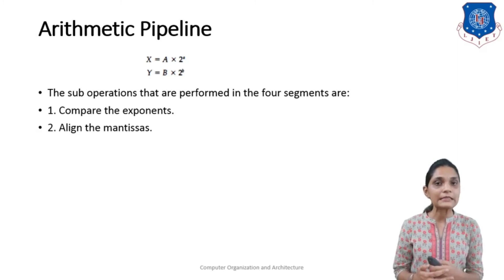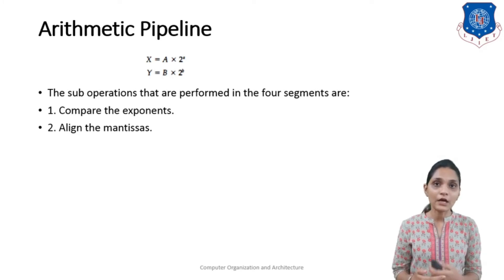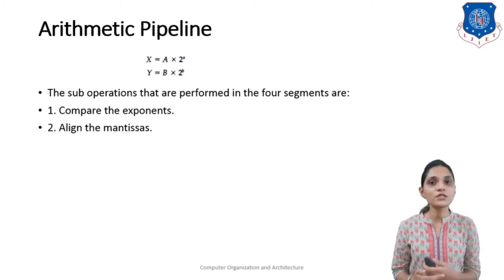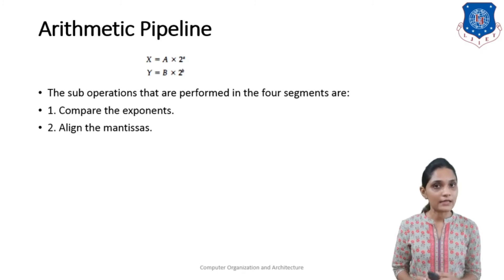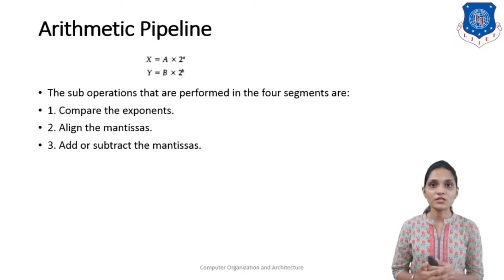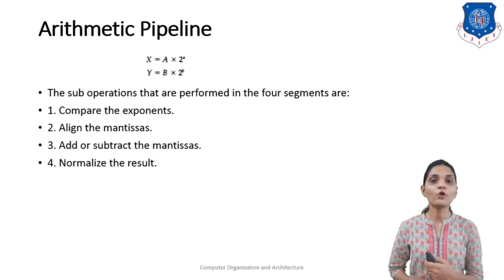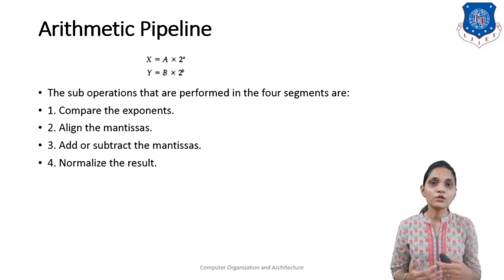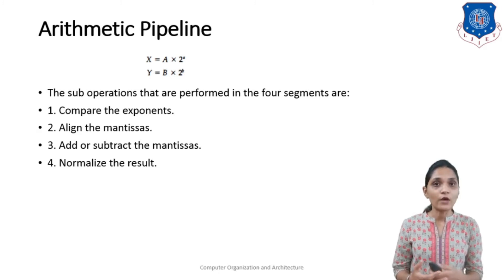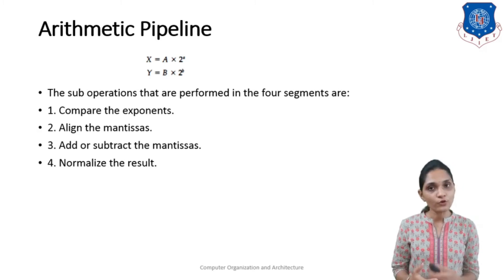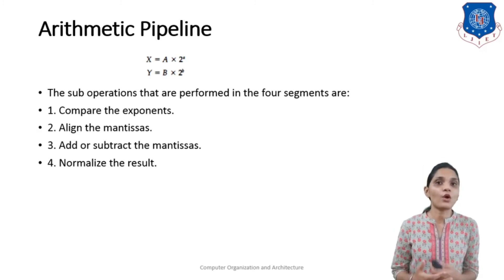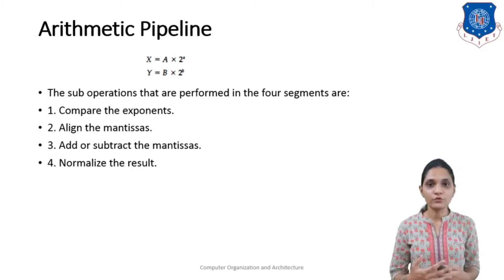To align the mantissa, we first select the largest exponent from both numbers, and according to that largest exponent the second number's mantissa is shifted. The third task is the addition or subtraction operation of the mantissa. The fourth task is normalizing the result. After addition or subtraction the result may be something like 1.2 or 1.3 — not in normalized form — so you must normalize it. In the fourth segment we perform this normalization.